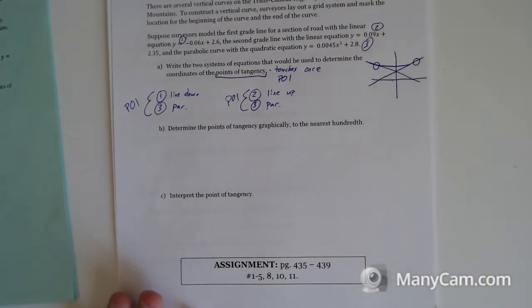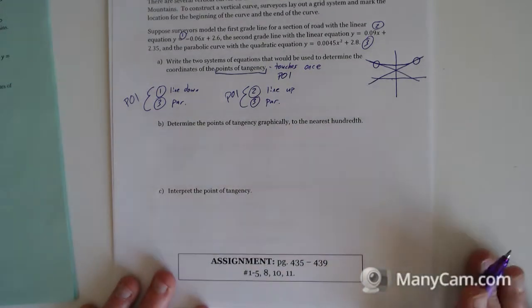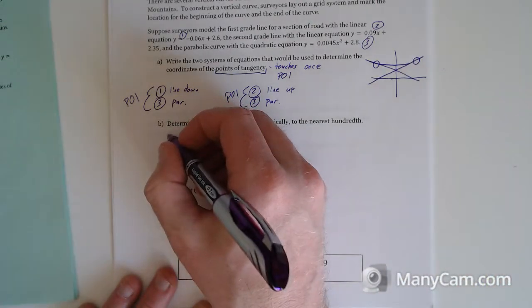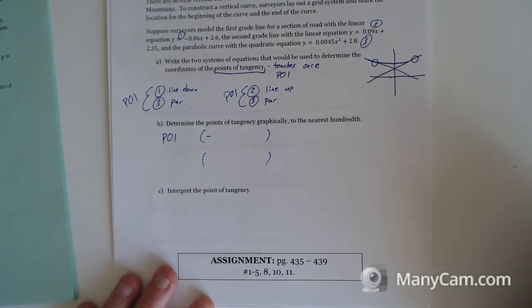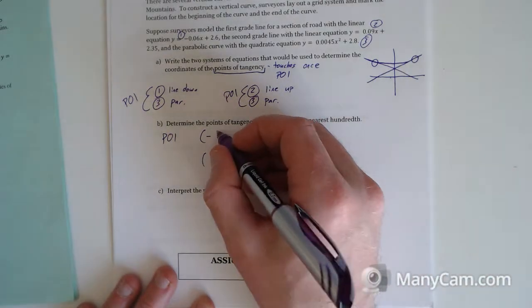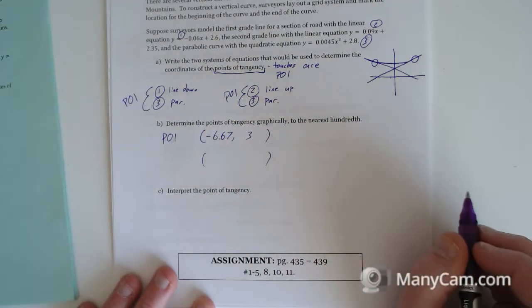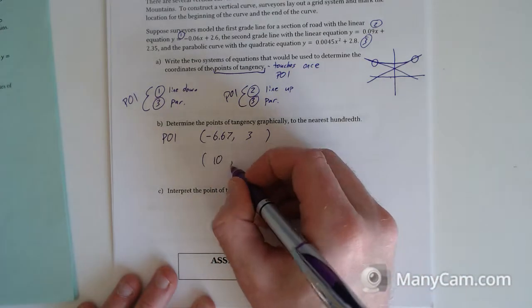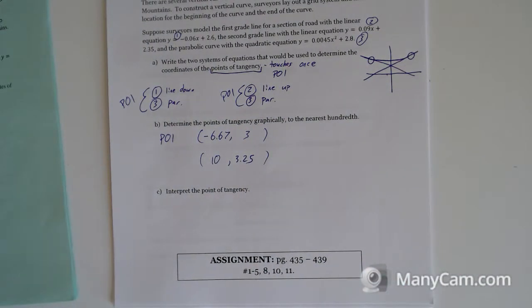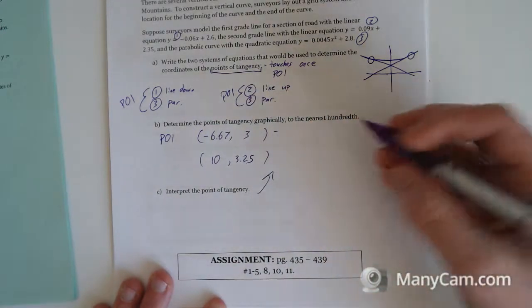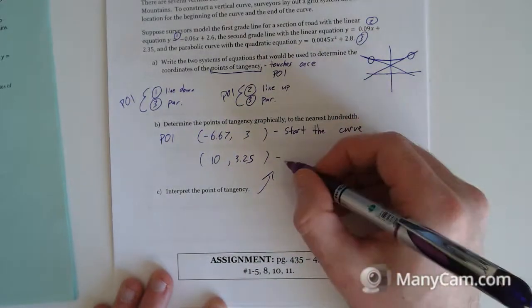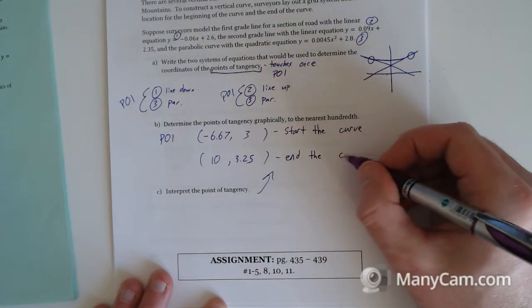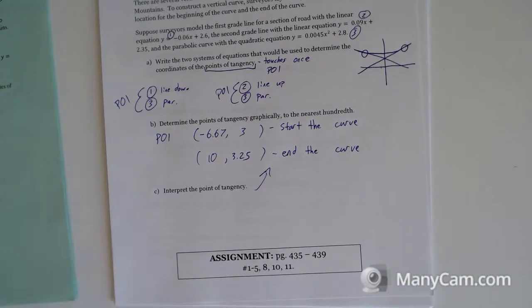Determine the points of tangency graphically to the nearest hundredth. Okay, pause this. It probably is going to take about four minutes for you guys. But give this a try. I got the solutions as, to the nearest hundredth, negative 6.67 and 3, and the other one is 10, 3.25. And interpret the points of intersection, the points of tangency. This is where we want to start the curve, and the last one is where we want to end the curve if we're building our curved roads. Those are going to be the two points where we have starts and ends.